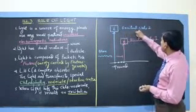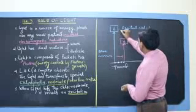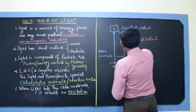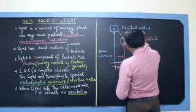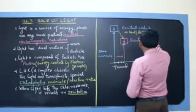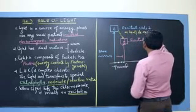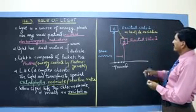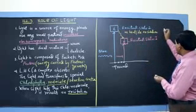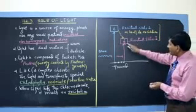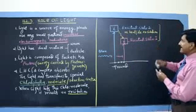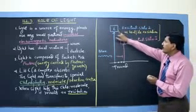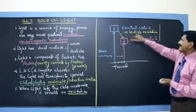Electrons in excited state number two release their extra energy as heat, and de-excitation occurs. Electrons then come into excited state number one. This means the energy available for photosynthesis is the same, because the extra energy is lost as heat.